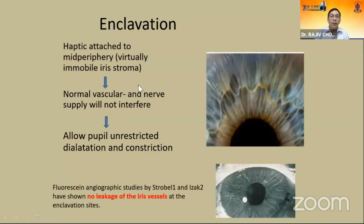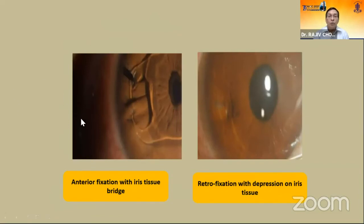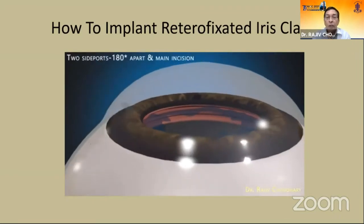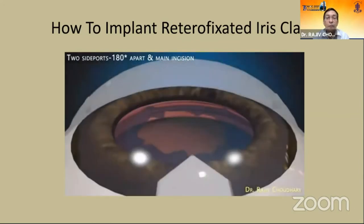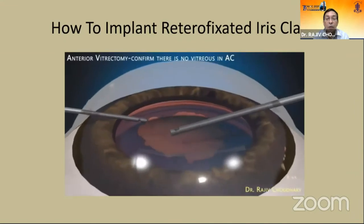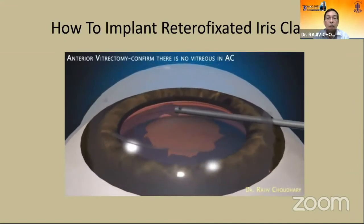The enclavation attaches the haptic to the mid-peripheral iris, which is relatively immobile. Normal vasculature and nerve supply is not interfered with. It allows unrestricted pupil dilation and constriction — the pupil will be slightly elliptical. Fluorescein angiography studies show no leakage of iris vessels at the enclavation site. Technique: two side port incisions 180 degrees apart, main incision 4.5 to 5 mm. Inject viscoelastic, perform anterior vitrectomy, then instill pilocarpine to constrict the pupil. Inject viscoelastic into the anterior chamber.